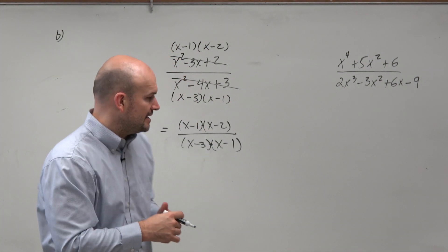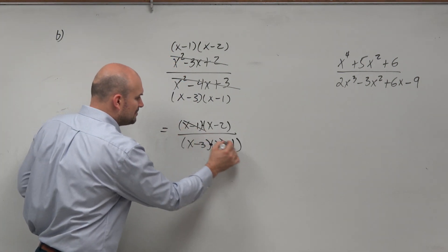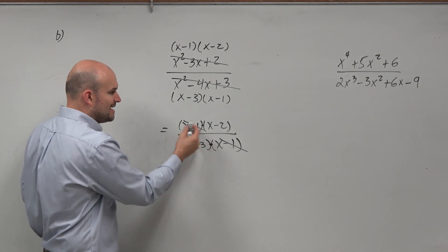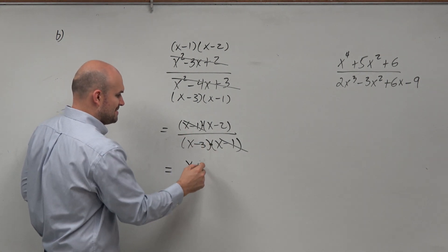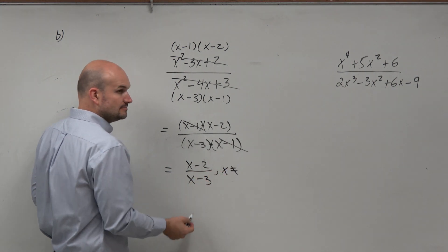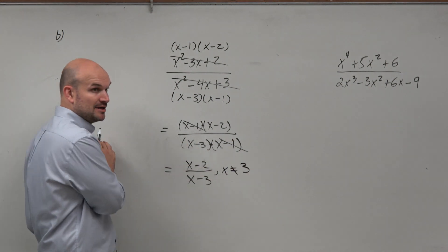Since they're now separated by multiplication, I can apply the division property. So therefore, we recognize that I have x minus 2 over x minus 3, where x cannot equal 3, because 3 makes the denominator 0.